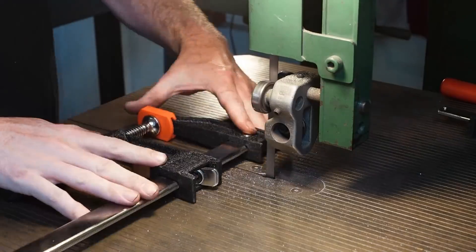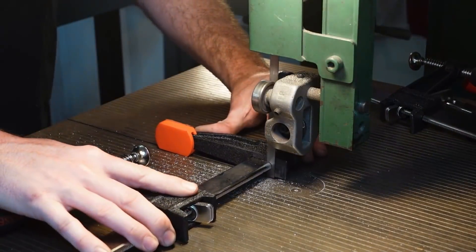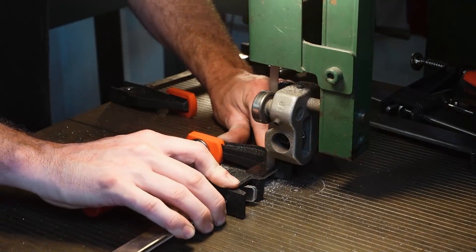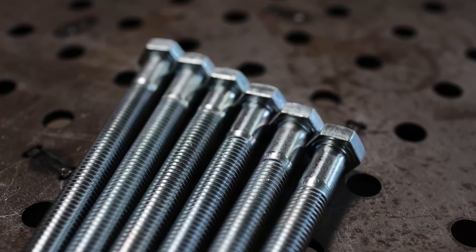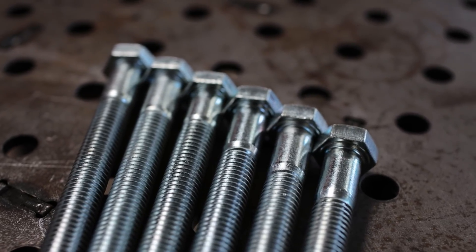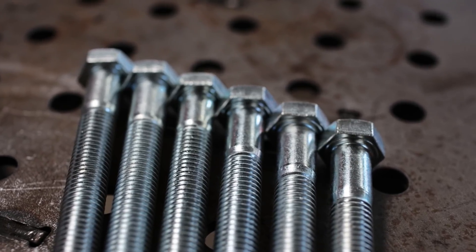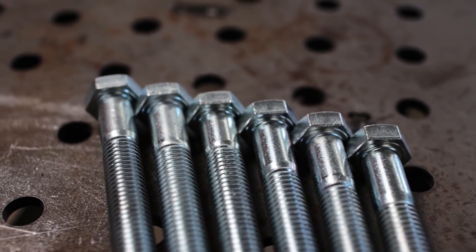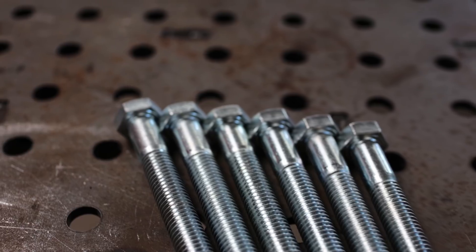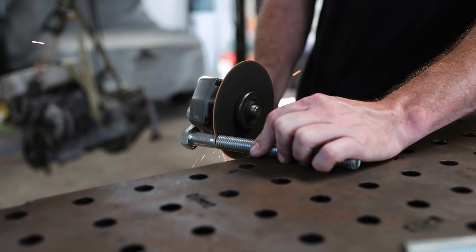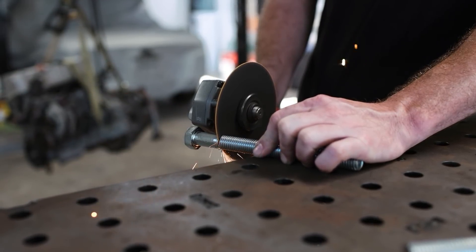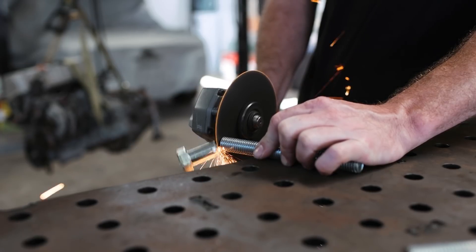So we're going to take these brand new clamps and run them right through the bandsaw and cut the fixed head off of every single one of them. I also got a handful of 5/8 shouldered bolts that we're going to use, and we're going to cut the threads off of these as well. The reason being that these bolts fit perfectly in the holes of the table. Now you may have figured out what we're going to do, but if not, stay tuned—it'll make sense shortly.